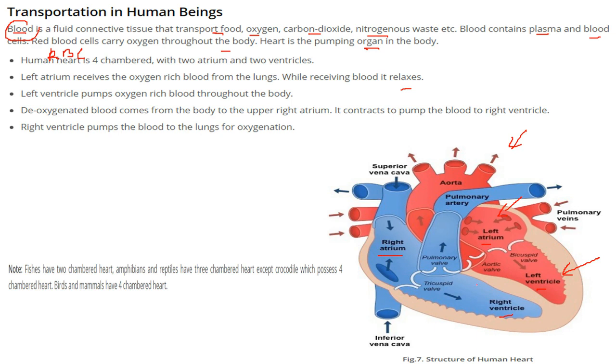Then the deoxygenated blood - because the oxygen will be used in the body - this deoxygenated blood comes from the body to the upper right atrium, and it contracts to pump the blood to the right ventricle.